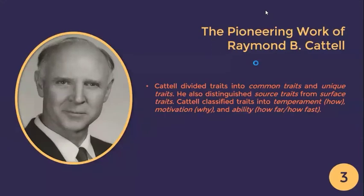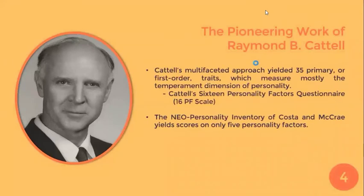Cattell divided traits into common traits, shared by many, and unique traits, peculiar to only one individual. He also distinguished source traits from surface traits. Surface traits are personality elements that can be directly observed, while source traits must be inferred through statistical methods. Cattell classified traits into temperament, motivation, and ability. His multi-faceted approach yielded 35 primary traits, with his 16-PF scale being the largest and most frequently studied. The NEO personality inventory of Costa and McCrae yields scores on only five personality factors.